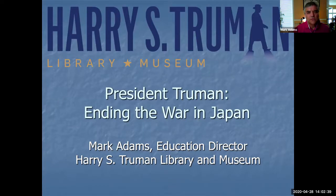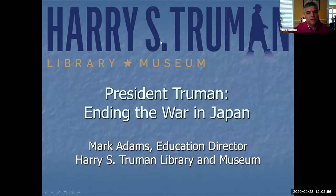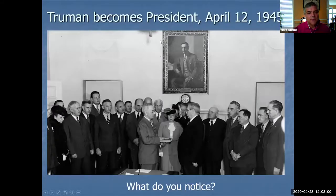Truman's decision to drop the atomic bomb came in August of 1945. We're going to go back to the spring — actually into the month we're in right now, April of 1945 — 75 years ago this year, to see a particular event that affected Truman and to put this into context. Truman becomes president in April of 1945, the 75th anniversary this year.